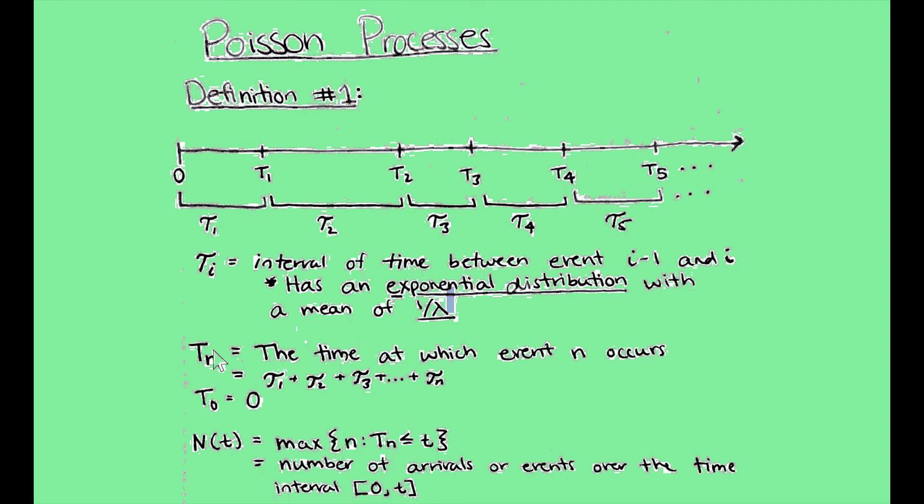And we already said that t of n is the time at which event n occurs. So this is when event 1 occurs, t2 is when event 2 occurs, t3 is when event 3 occurs. But we can also think of this as the summation of all the arrival times up to that event n. So up to event 1, we just have tau 1. And up to event 3, we have tau 1 plus tau 2 plus tau 3. And then we know that, of course, t0 is equal to 0 because we have not had any time pass.